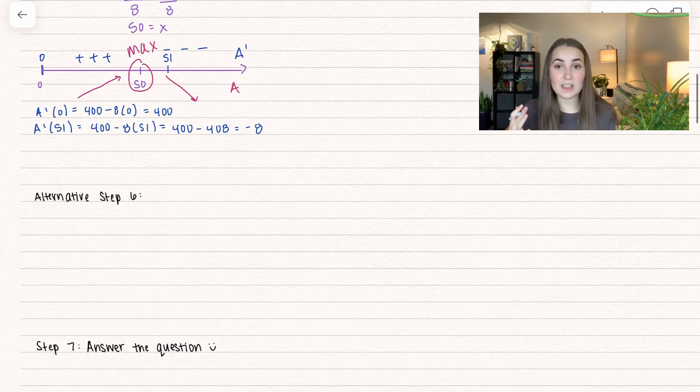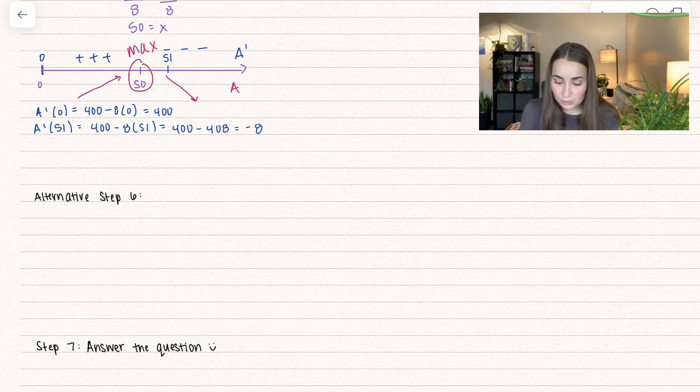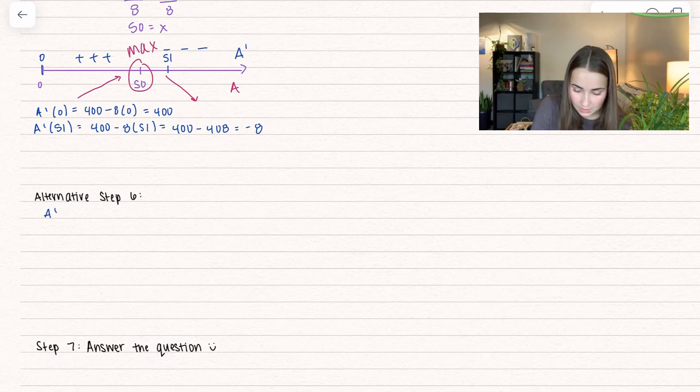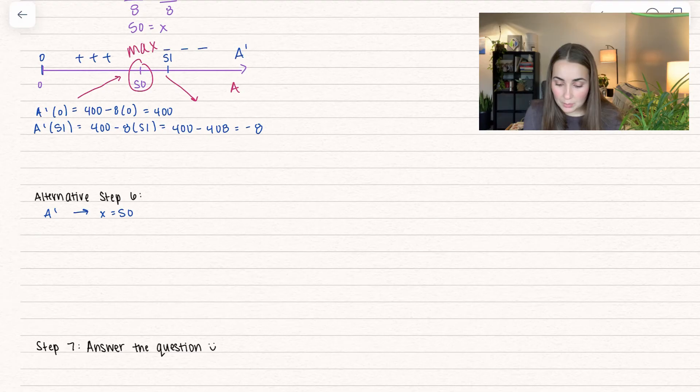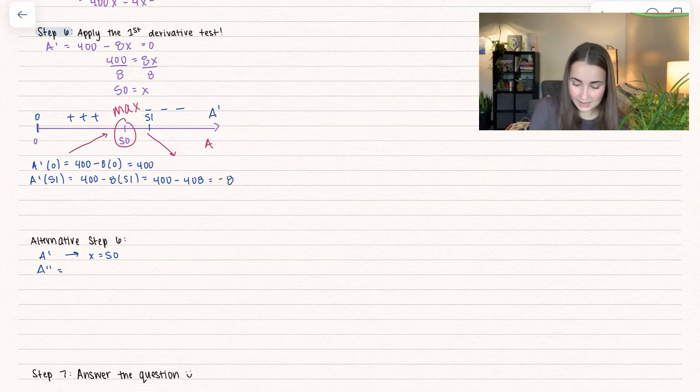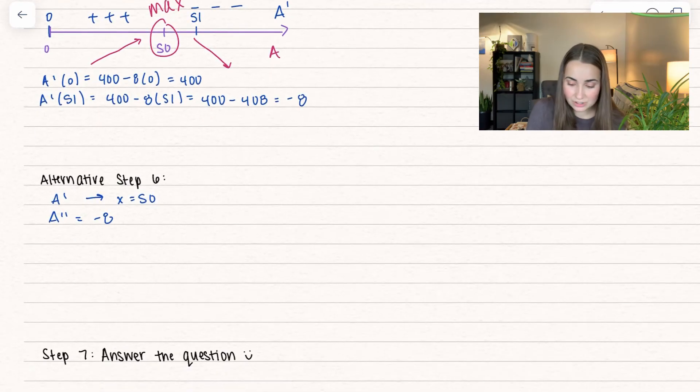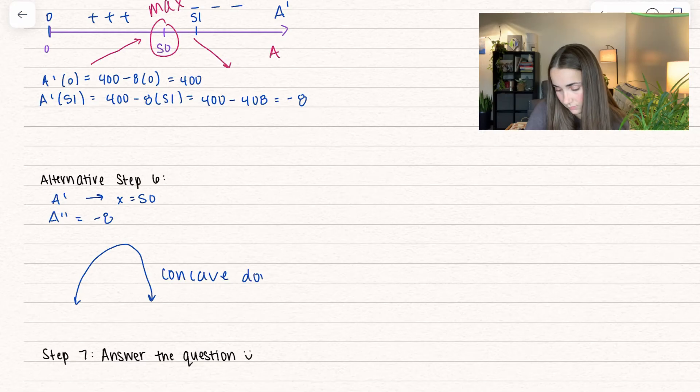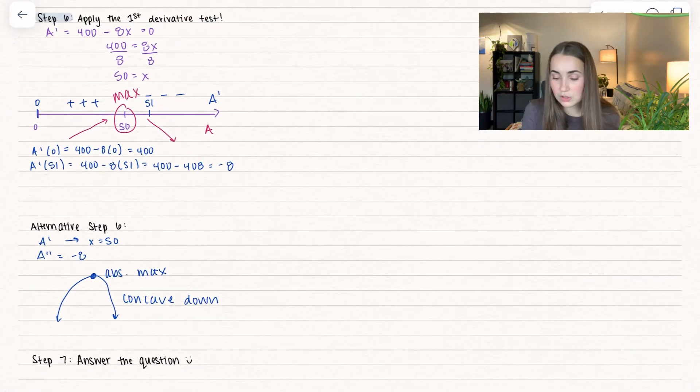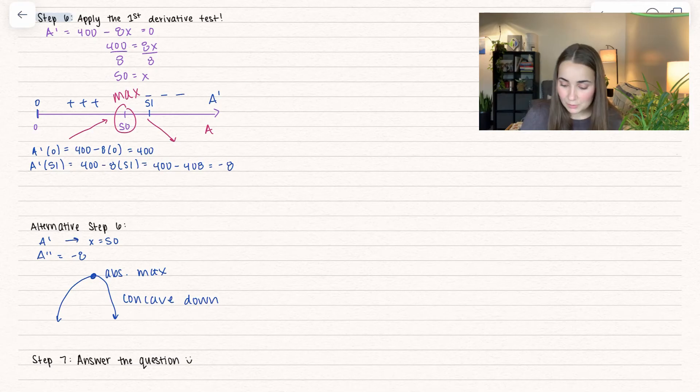We have an alternative way to do this step. First, we have to find the critical value - we find A prime, and we also have X equals 50. That first part stays the same. But actually, what we do is a second derivative test. If we take the derivative of 400 minus 8X, I get negative 8, which tells me our function is concave down on the entire interval. Since it's concave down, that tells us we have an absolute maximum. You can do it with either test, whatever you prefer.